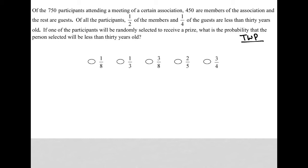of the 750 participants attending a meeting, so I know off the bat here that there are 750 people attending a meeting, we're told that 450 are members of the association. So I'm going to say 450 are members, and the rest are guests.